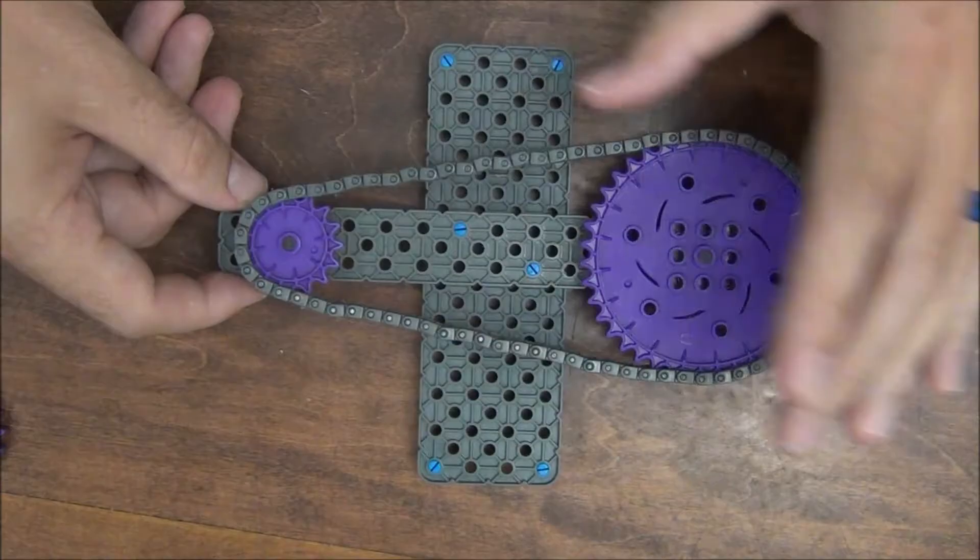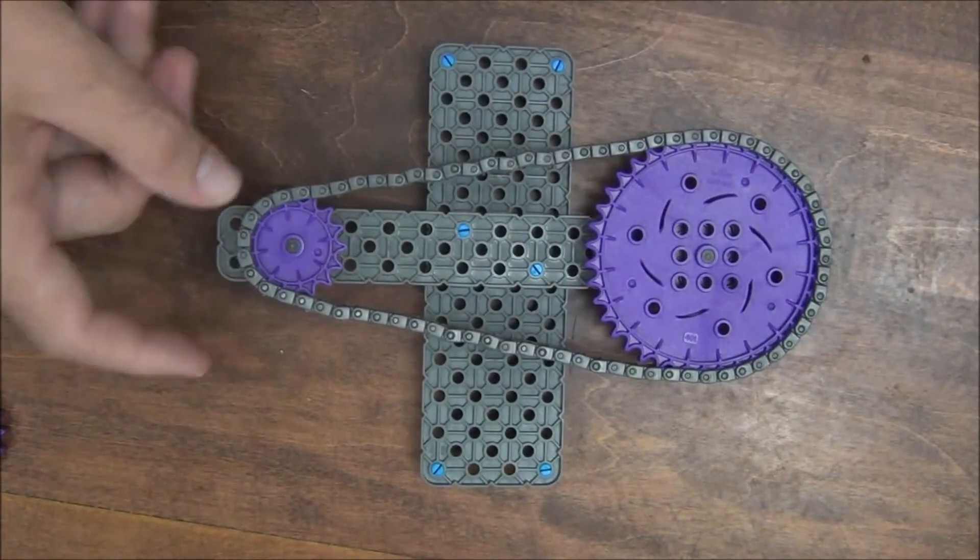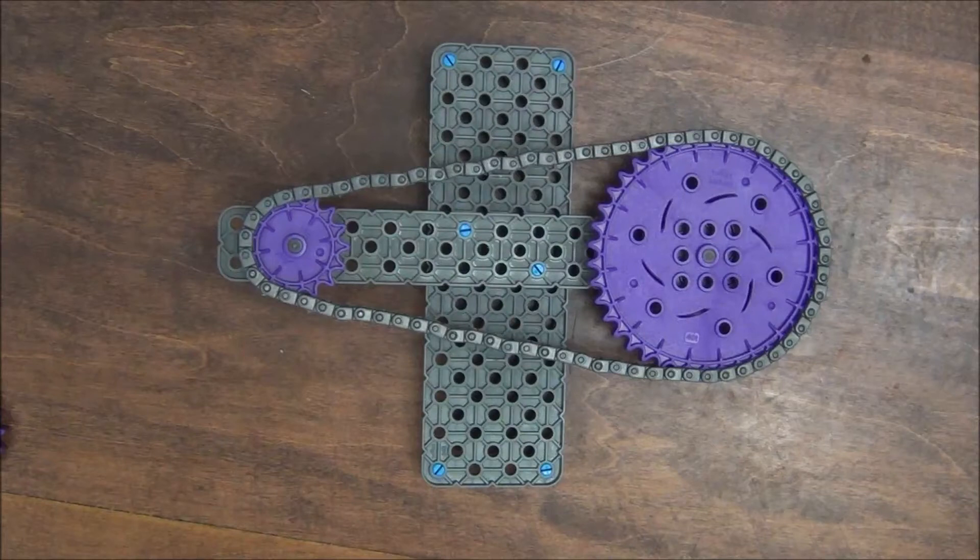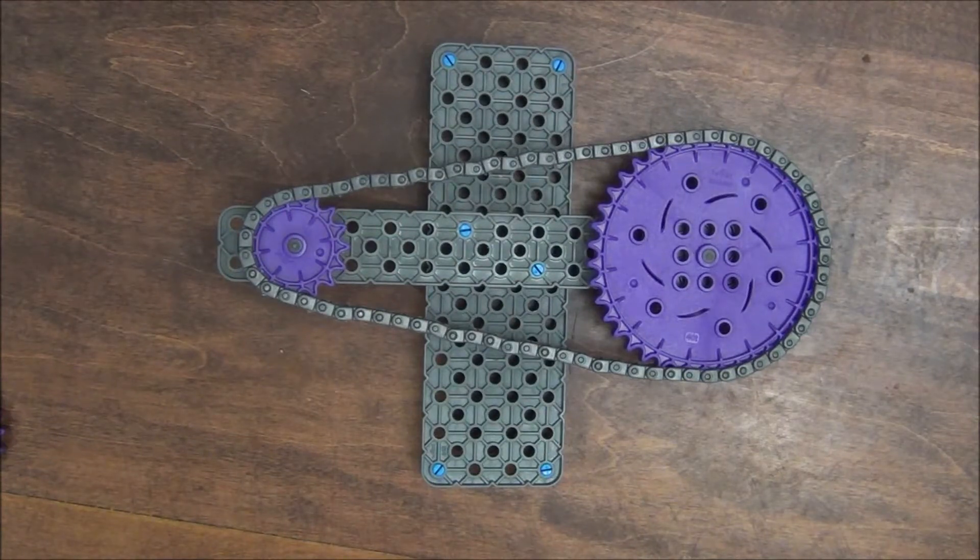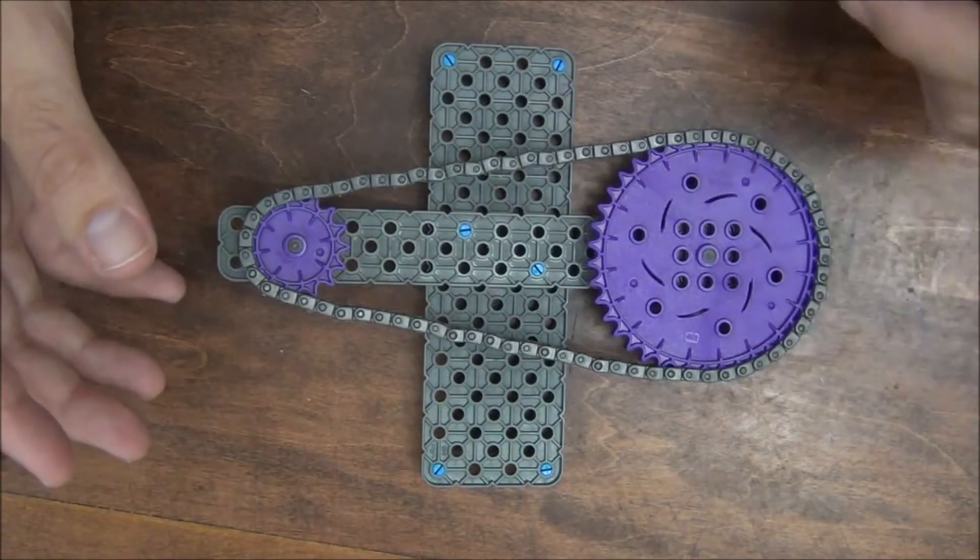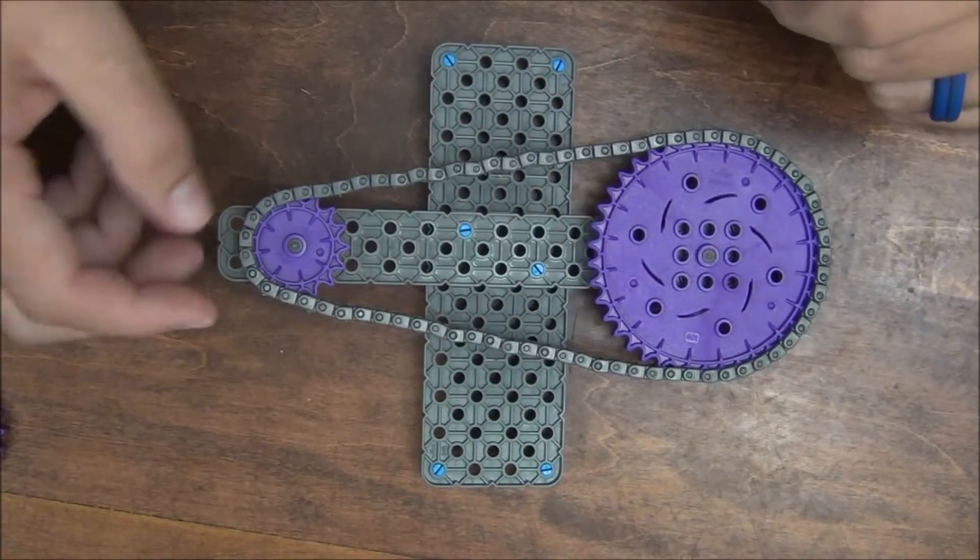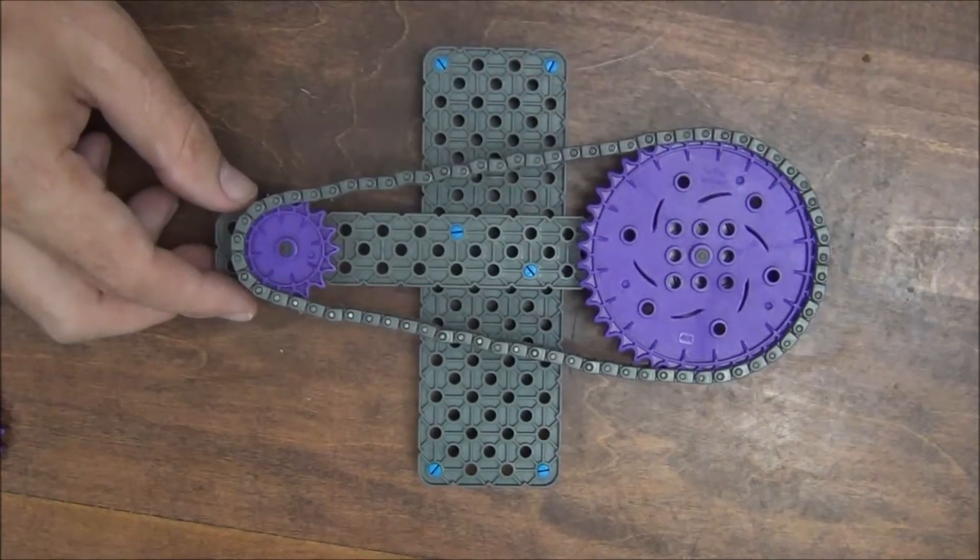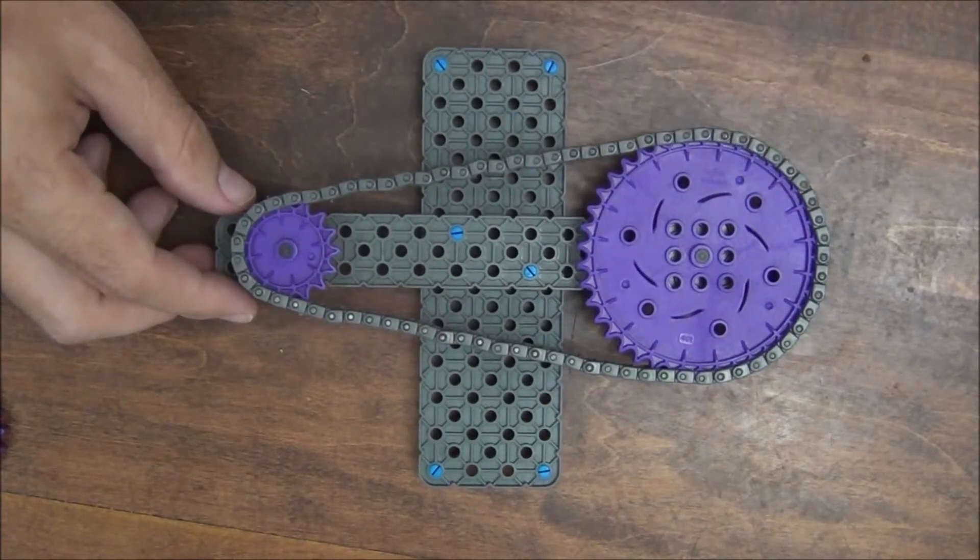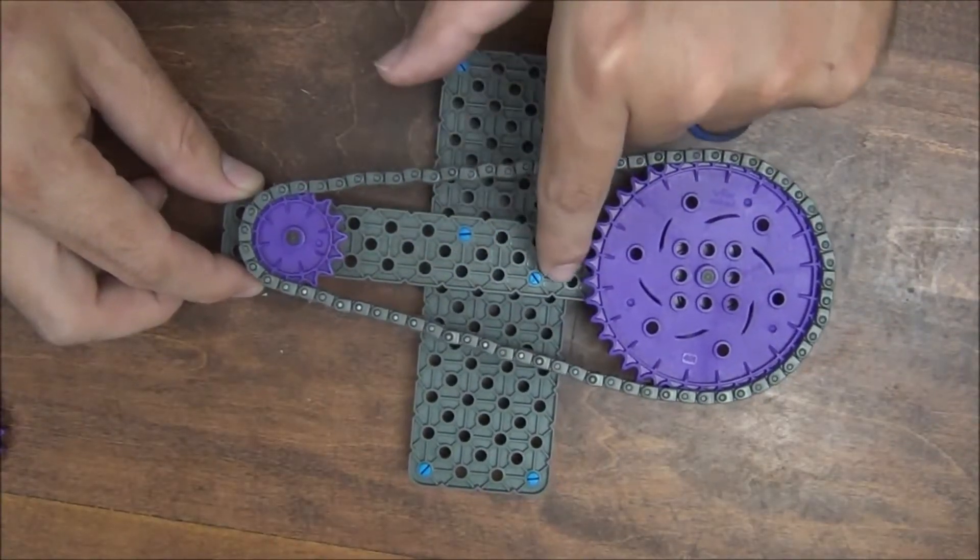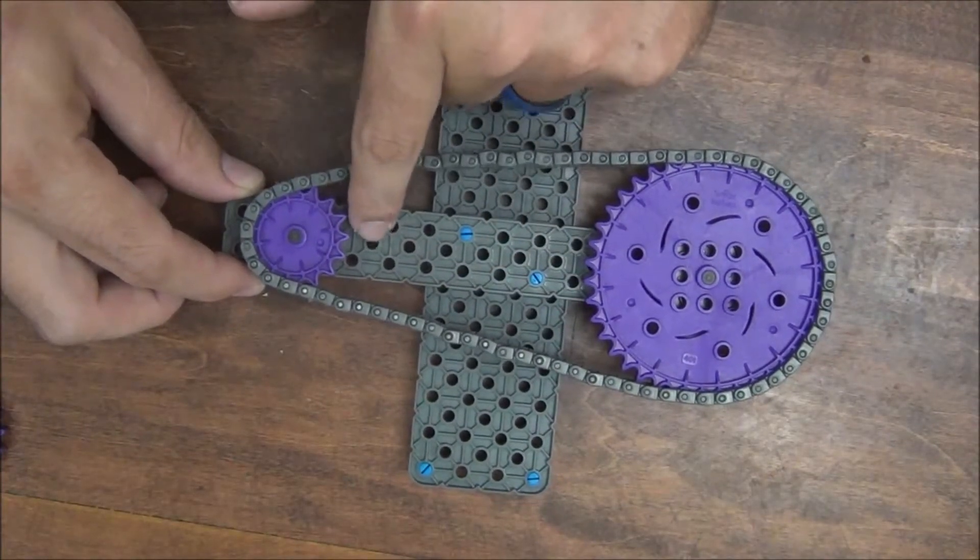Now, why do we use chain and sprockets instead of gear trains all the time? Well, there are a few reasons for it. Number one is it's always possible that you'll need your drivetrain to go around a corner or bend around something, or perhaps there's some other object in the way that would prevent you from putting gears straight across and connecting them using idler gears. In that case, a chain and sprocket allows you to avoid that.